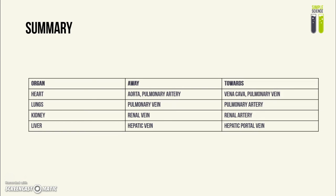Here is a summary table of the main blood vessels. Carrying blood away from the heart: the aorta and the pulmonary artery. Towards the heart: the vena cava and the pulmonary vein. Away from the lungs: the pulmonary vein. Towards the lungs: the pulmonary artery. Away from the kidney: the renal vein. Towards the kidney: the renal artery. Away from the liver: the hepatic vein. Towards the liver: the hepatic portal vein.